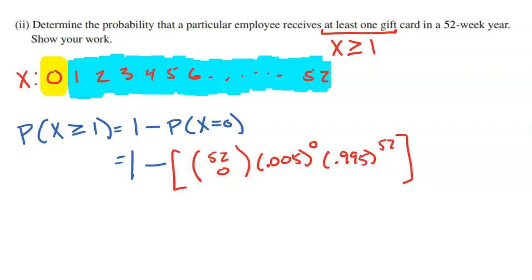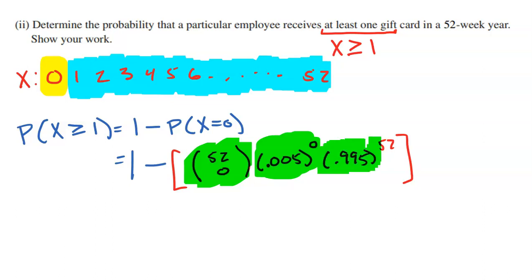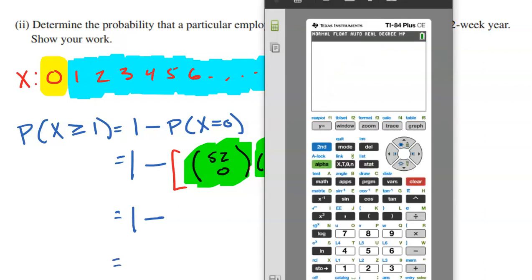The opposite of success: one minus 0.005 equals 0.995. Remember the three pieces of a binomial calculation. The first piece — how many ways it can happen — is 1 for zero wins. The probability of success to the zero power is 1, and then 0.995 to the 52nd power for the failures. I'm going to find that on the calculator and subtract to get the final answer. Here's my TI-84.